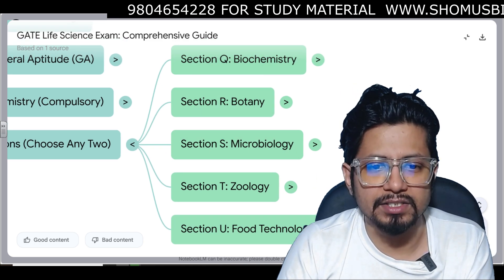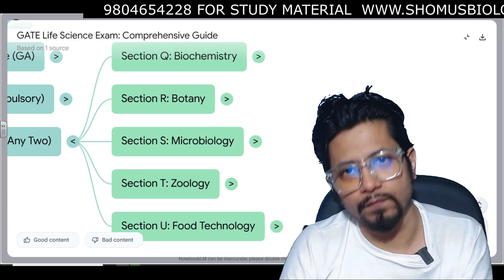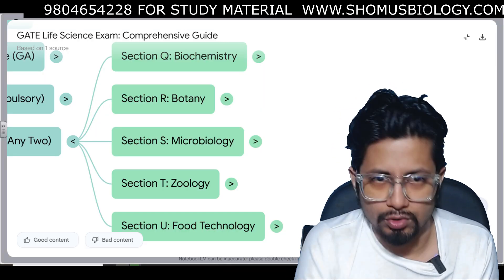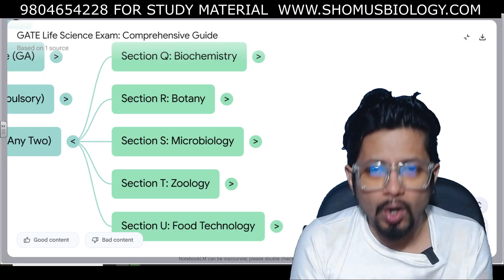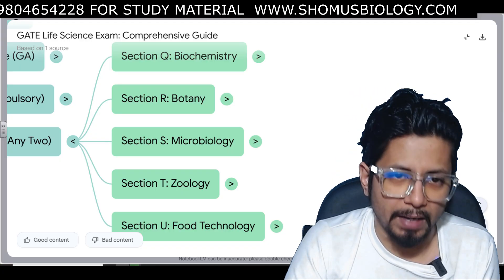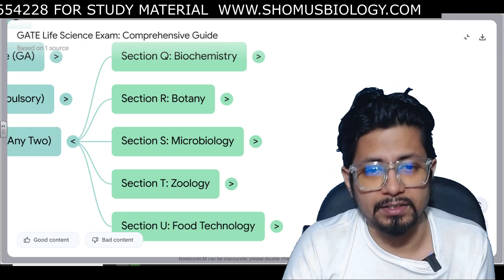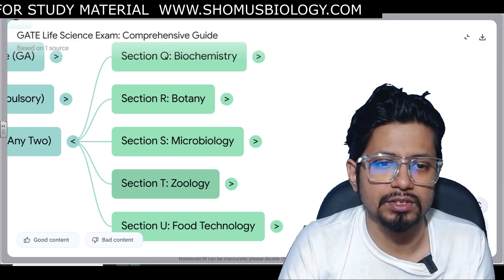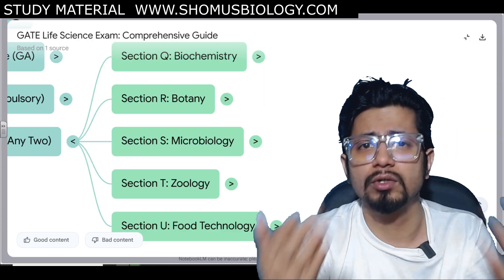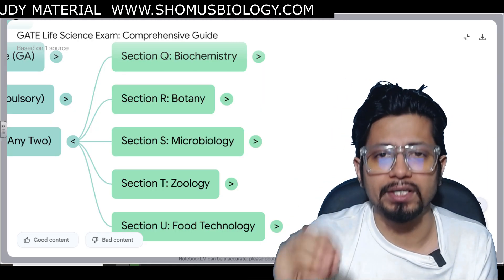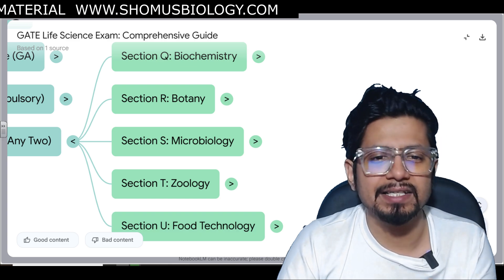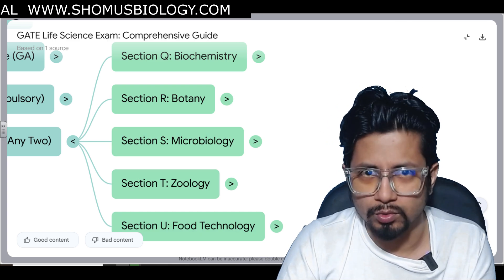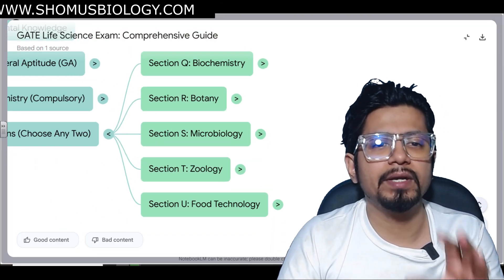Any two subjects, either it is Biochemistry, Botany, Microbiology, Zoology, or Food Technology. From these five different sections you can choose any. If you're from modern biology subjects then choose Biochemistry and Microbiology. If you're from classical biology subjects then choose Zoology or Botany, Zoology Microbiology, Botany Microbiology, Zoology Biochemistry - it is your choice. If you're from food and nutrition you need to choose Food Technology and then you choose Zoology probably or Biochemistry which will suit your preparation style.